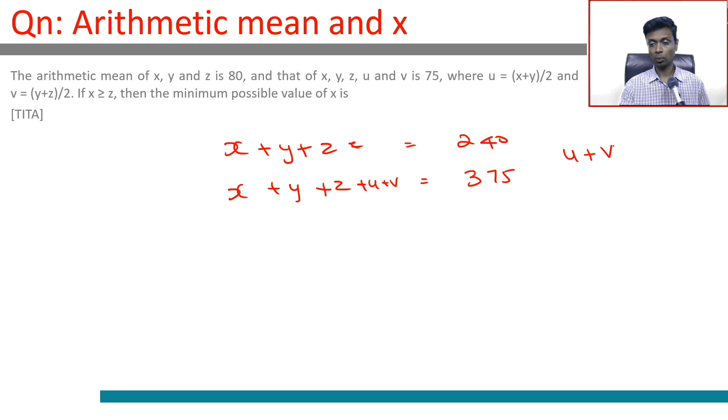Therefore, u + v = 375 - 240 = 135, where u = (x + y)/2 and v = (y + z)/2.